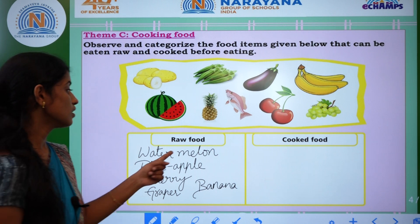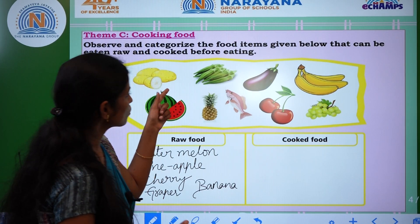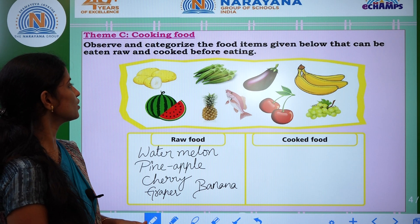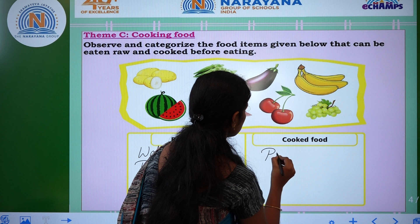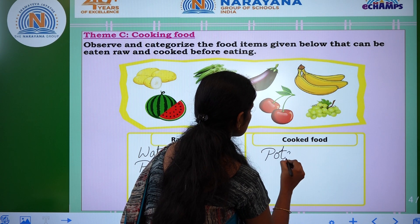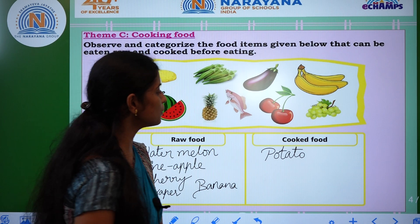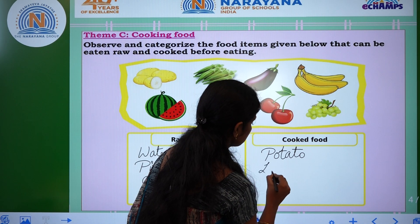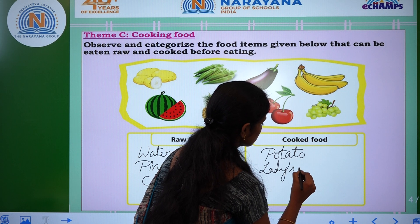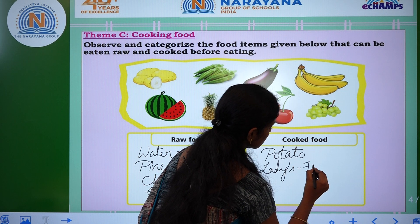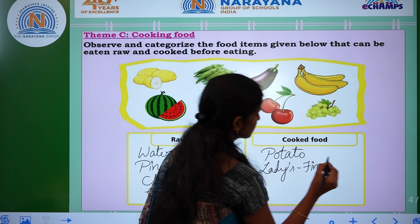We can eat these foods raw. Next — cooked food. Foods you cook before eating include chicken, potatoes — P-O-T-A-T-O — potato, and ladies finger — L-A-D-I-E-S F-I-N-G-E-R — ladies finger.